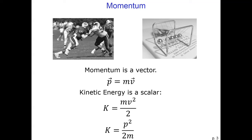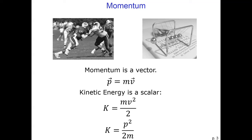If two objects have the same velocity but one has a larger mass — say a car and a motorcycle driving in the same direction at the same speed — then the car will have a much larger momentum than the motorcycle. If two objects have the same mass but one is traveling at a larger velocity, then the faster object will have a larger momentum. The standard units for momentum are kilograms meters per second, since it is mass times velocity.